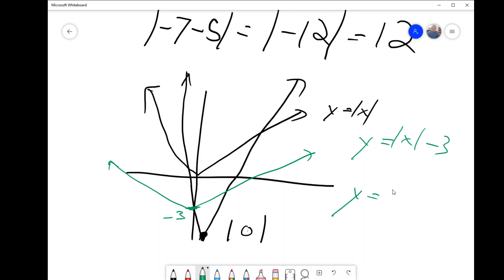If your graph is y equals the absolute value of x minus 3, where the minus 3 is in the brackets, I'm going to change colors here.